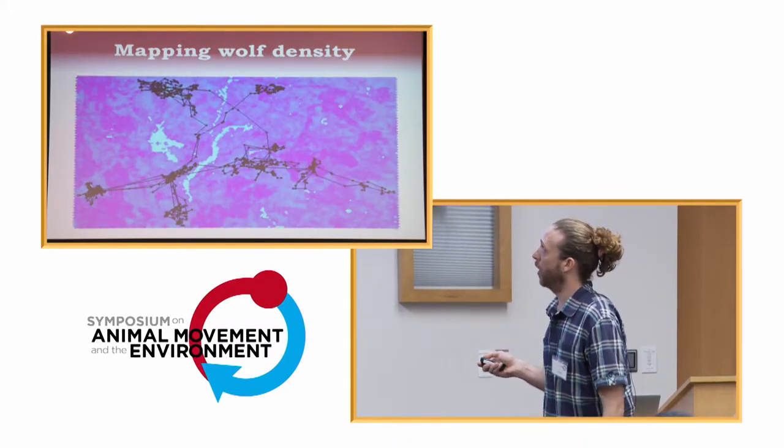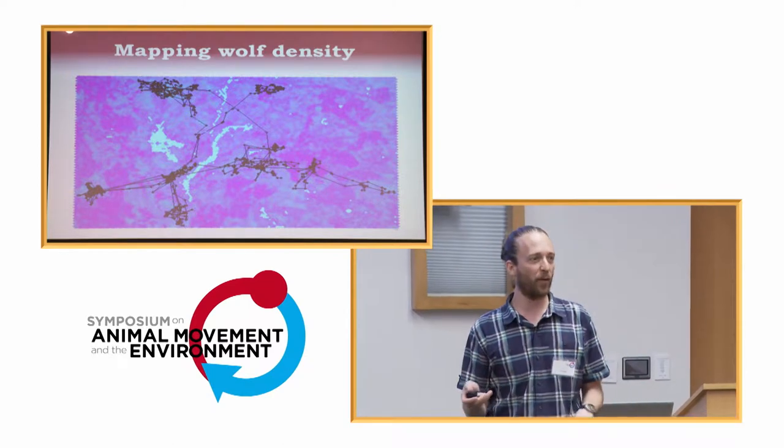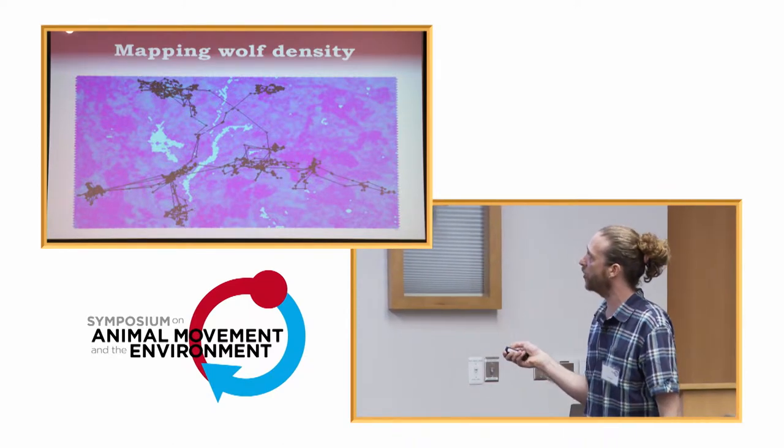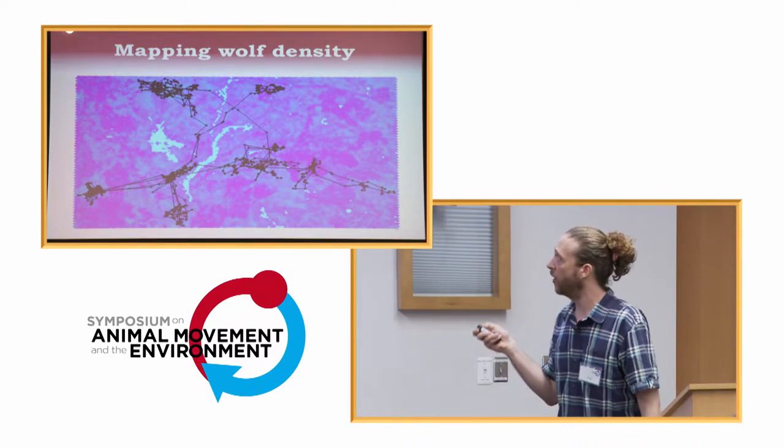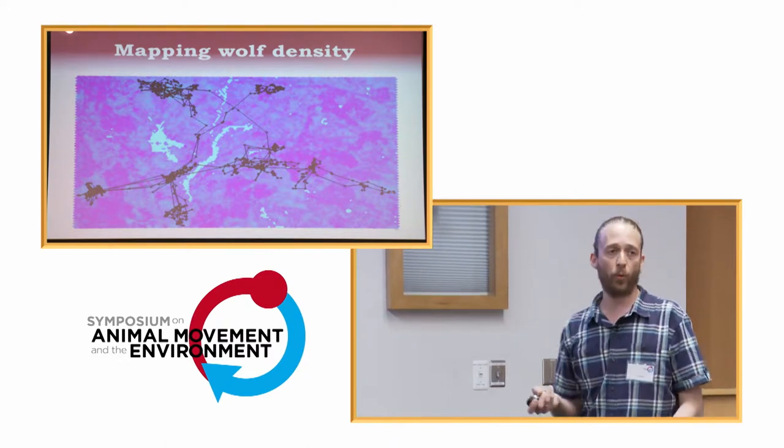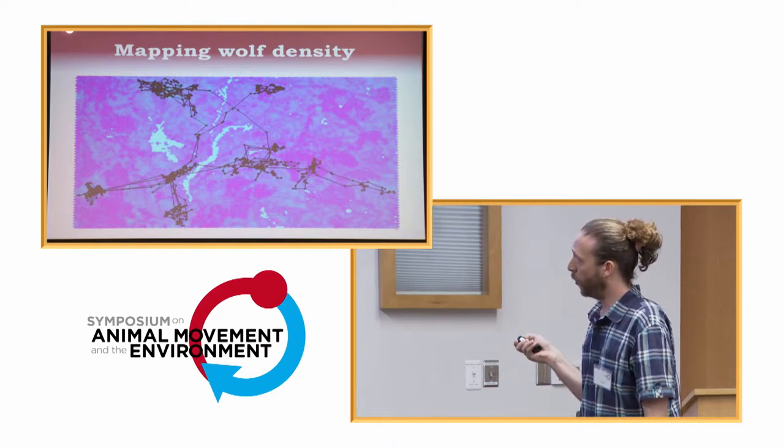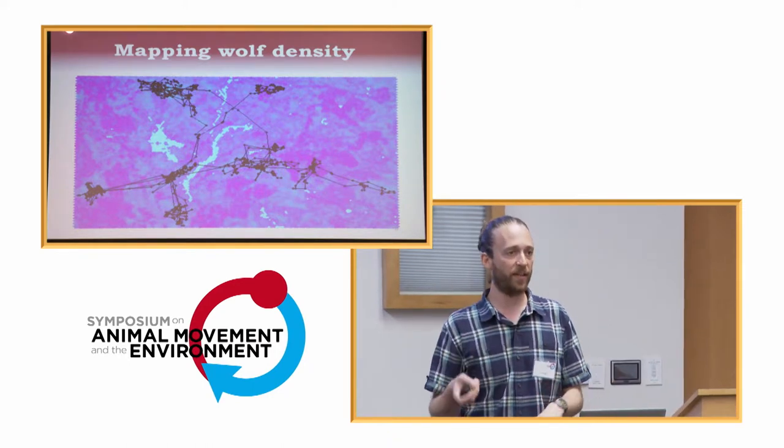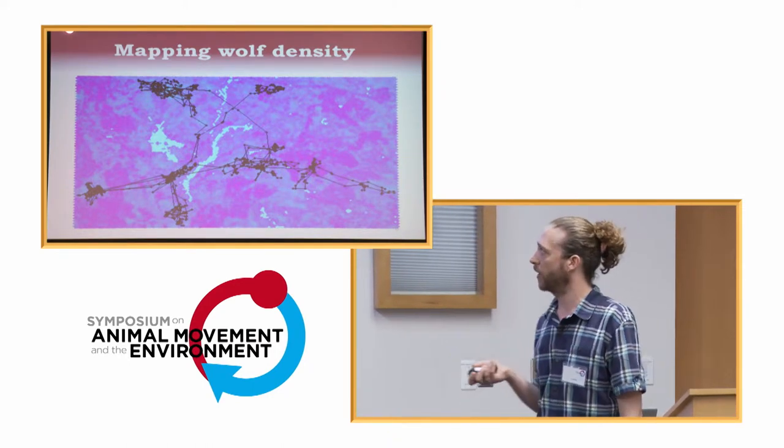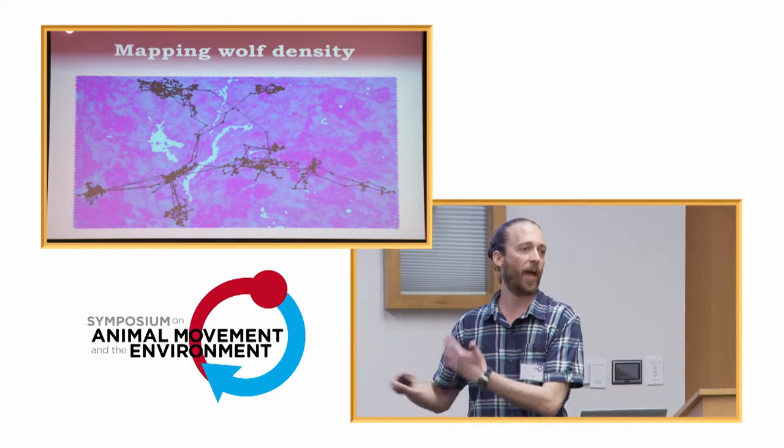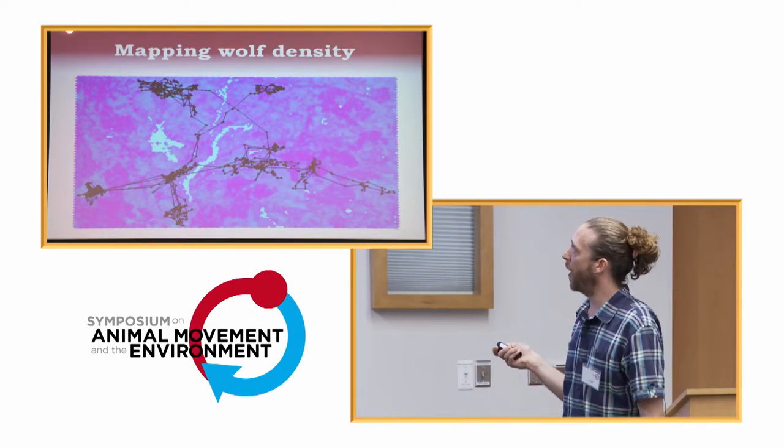And just to show you, give you the feel of how this looks, this is a caribou trajectory, single caribou, single year, and this map in the background of the wolf density averaged across the seasons. For this caribou, purple is high density, blue is low density. And again, we'll be asking how the caribou respond to these maps.